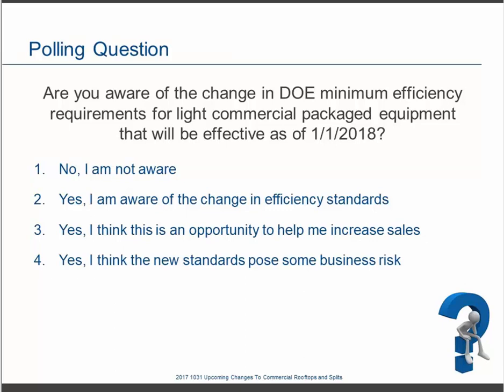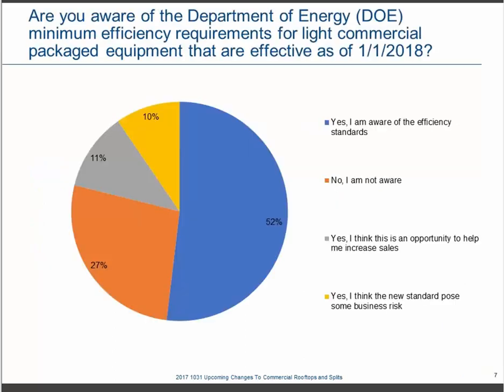As of January 1, 2018, the Department of Energy has new regulations coming associated with light commercial rooftops and split systems. Take a moment to fill out the poll on your degree of awareness — from 'I've never heard of this before' to 'yes, I've heard of this but I'm here to learn more.' We tapped our database of contractors, technicians, and other channel players to ask this same question, and found pretty decent awareness that there's an efficiency standard, but some uncertainty as to exactly what that means.